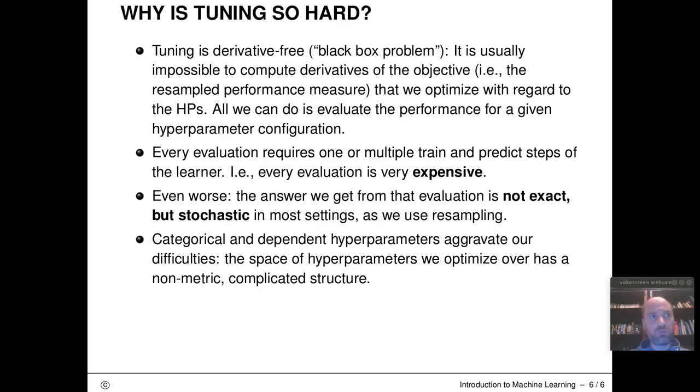So every evaluation can actually be quite expensive. So this can be in the range of seconds, minutes or even days, if we are using a super slow learning algorithm on a very large data set. Even worse, the answer that we get from that evaluation is not exact, but it's stochastic, because in many settings, we use cross validation, the splits of this are random, and they are subject to random sampling noise. So this is actually a stochastic optimization problem now.